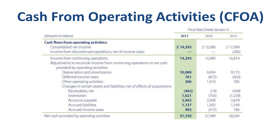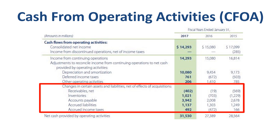The other significant line items in the reconciliation to CFOA are primarily related to working capital. If inventory on the balance sheet goes down, then cash goes up. During the year ended January 31st 2017, Walmart freed up $1 billion in cash from strong inventory management — a positive number on this line item signifying a source of cash.